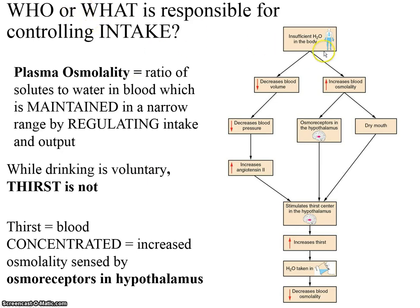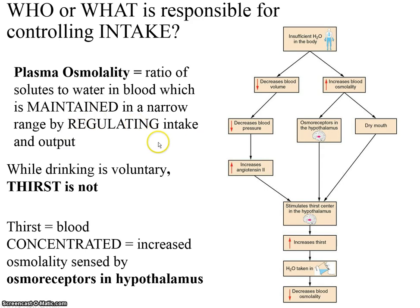Who or what is responsible for controlling your intake? Most people say they just drink ad libitum — when they want to. But I would counter that by saying you probably drink when you're thirsty. Thirst is a condition that is not voluntary. Thirst is something created by an imbalance in the body, and that imbalance has to do with plasma osmolality — meaning concentration. Osmolality is the ratio of solutes to water in the blood, and it is maintained in a narrow range by regulating intake and output. Thirst occurs when blood is more concentrated — when plasma osmolality increases.